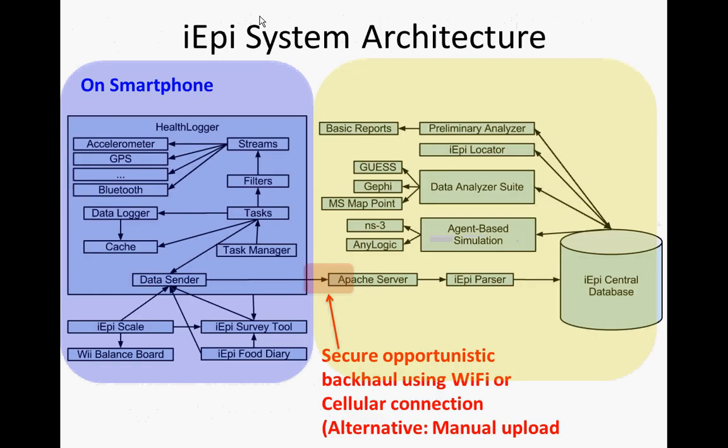There's an opportunistic data backhaul used to collect data throughout a study. This brings data from the smartphone in an encrypted form to a server in an opportunistic fashion, using Wi-Fi or cellular connections. Data sources include not only onboard sensors but potentially external sensors such as the Wi-Balance board, survey-collected data collected through the phone, and use of the smartphone to collect snapshots such as food that people have eaten. That data is brought back to the server where we can run simulations on it using agent-based or other types of aggregate models.